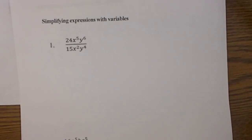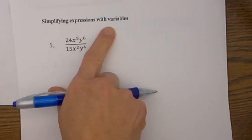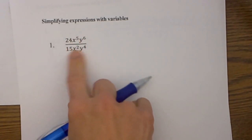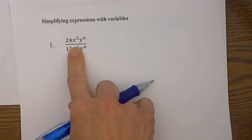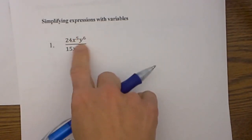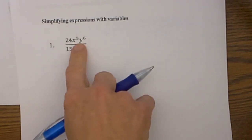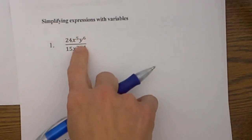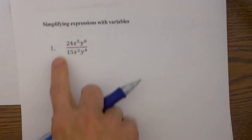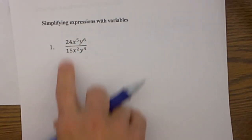Hi! Welcome to Moo Moo Math. Today we are going to learn how to simplify expressions with variables. This expression is a fraction, which is another word for rational. Sometimes you will hear them called rational expressions, which are just fractions. Here is our first example.